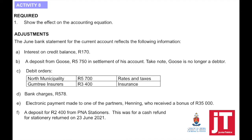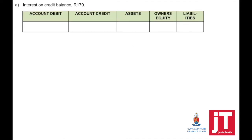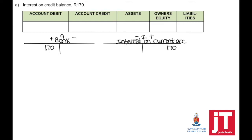Required: show the effect on the accounting equation. Adjustment A — interest on credit balance. Remember, a bank statement is the opposite from our books. A debit balance means sad, negative — it means that we paid interest. But a credit balance means we are happy; we've received interest for having money in our account. To show this in our books, when the business receives money, bank is always debited and the account credited is interest on current account. On the accounting equation: assets plus 170, owner's equity plus 170. Because our income increases, it will have a positive effect.